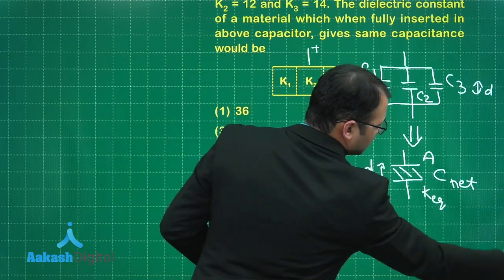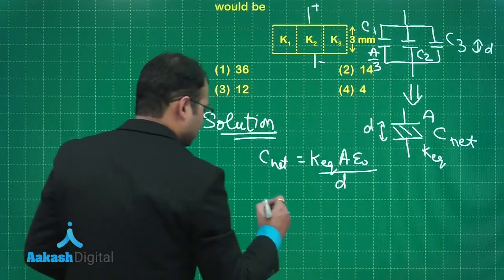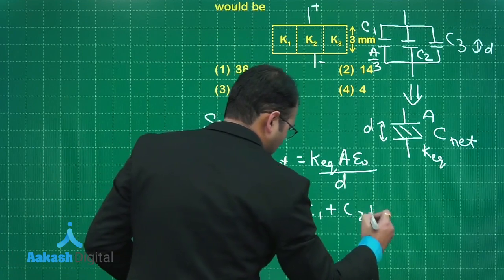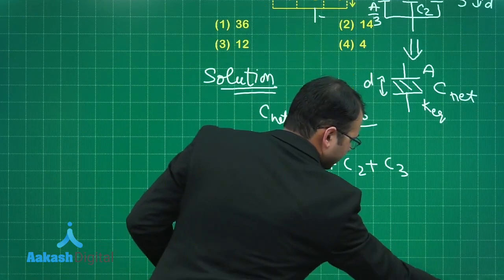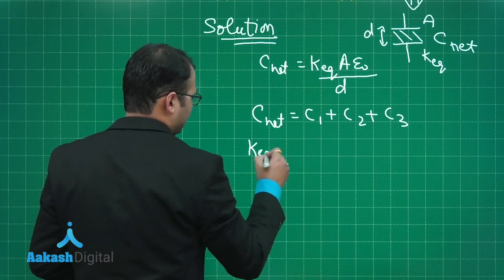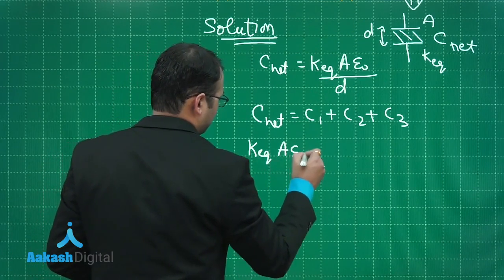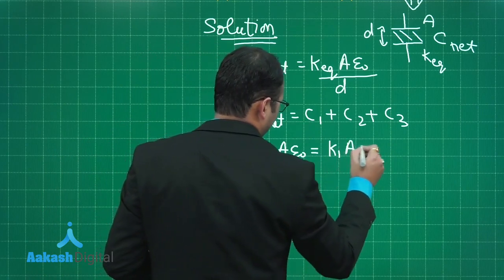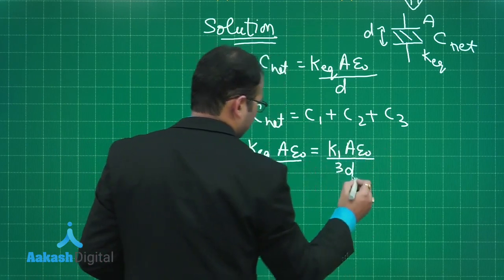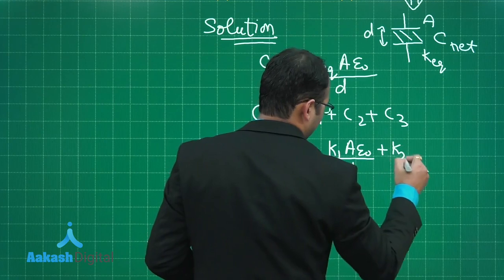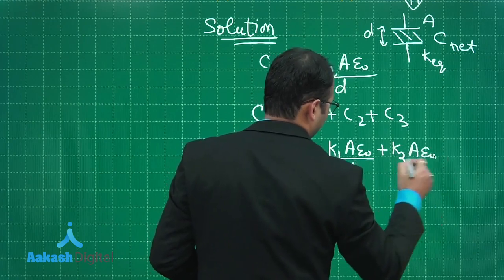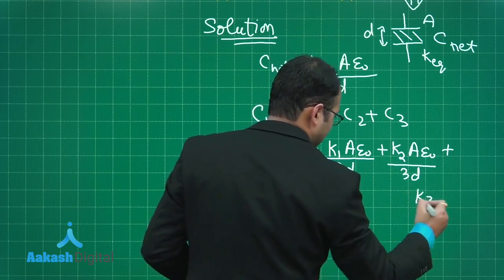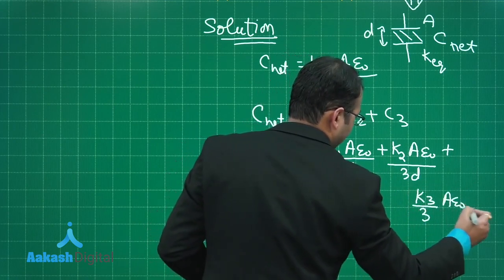Seeing the combination, it's simply the parallel set. So I will write C net equals C1 plus C2 plus C3. Now you will get here K equivalent A epsilon 0 by D would be equal to K1 A epsilon 0 by 3D plus K2 A epsilon 0 by 3D plus K3 by 3 A epsilon 0 by D.